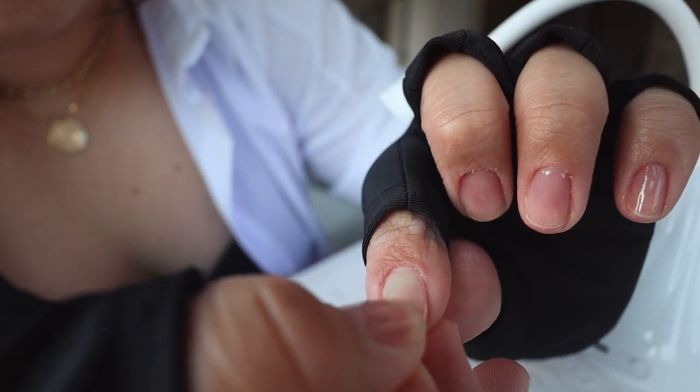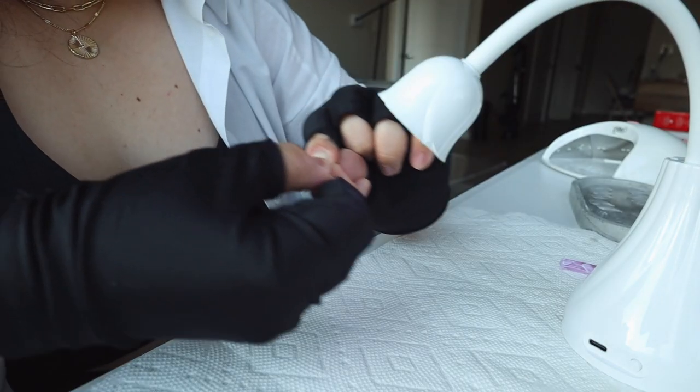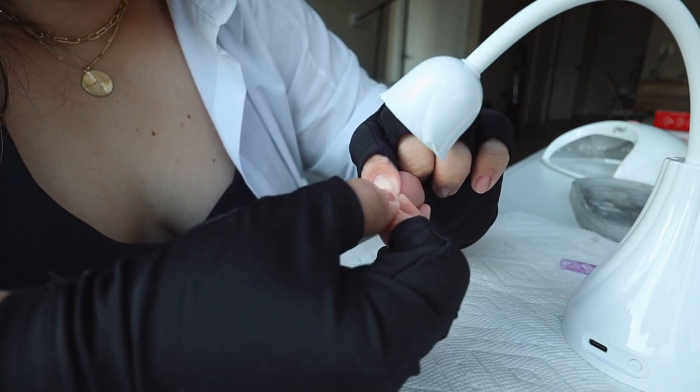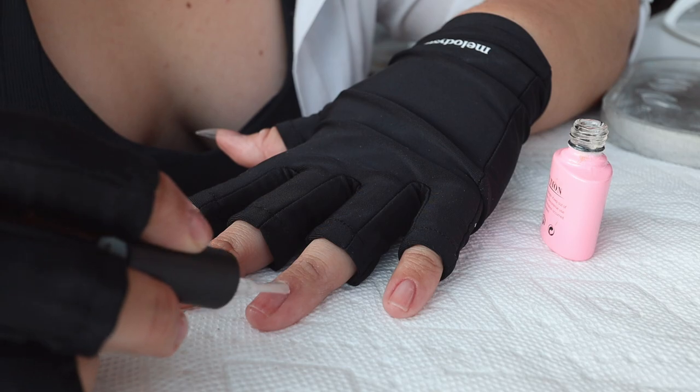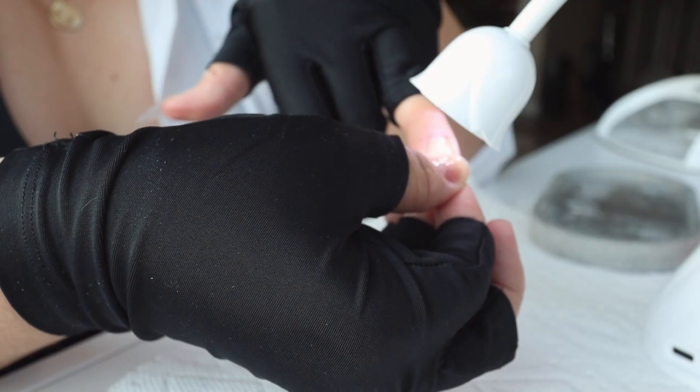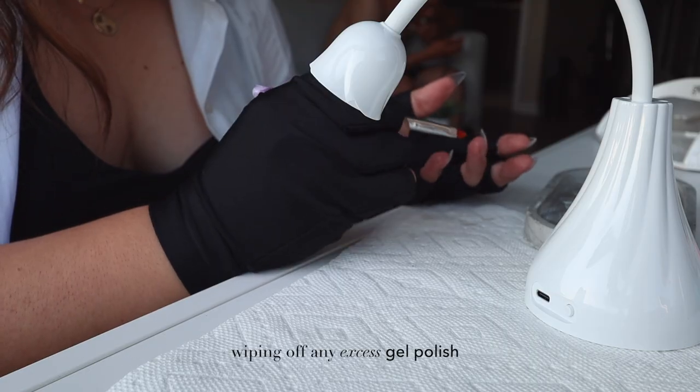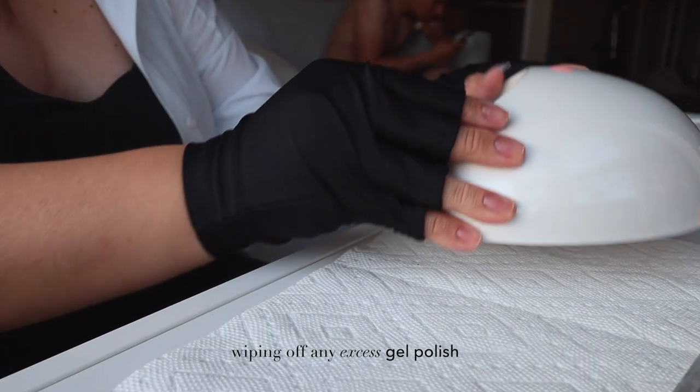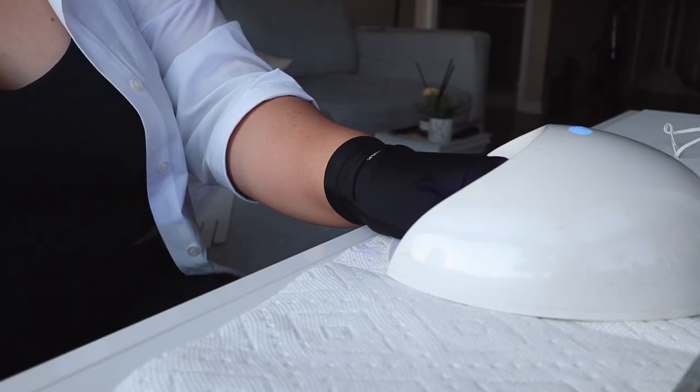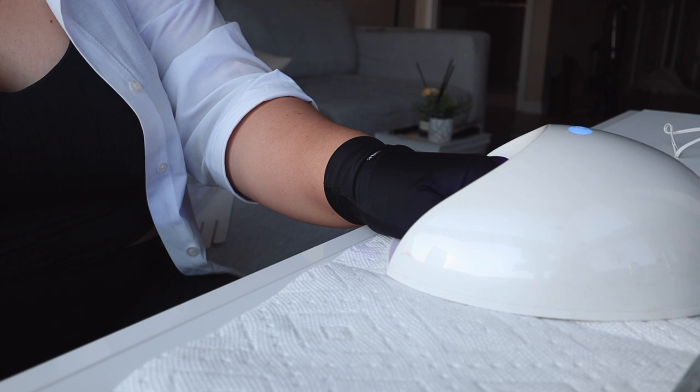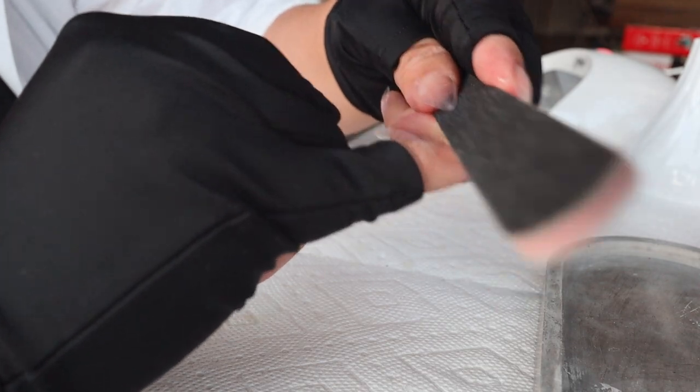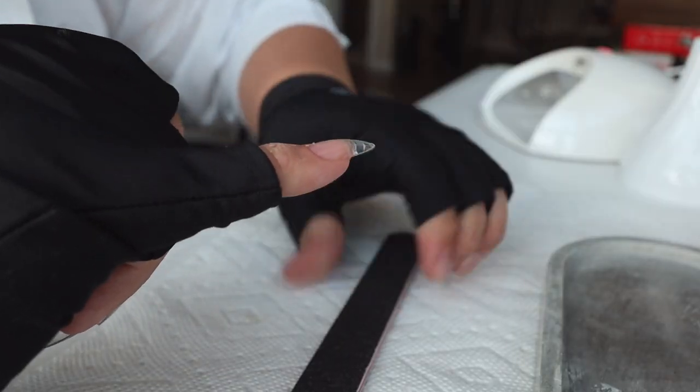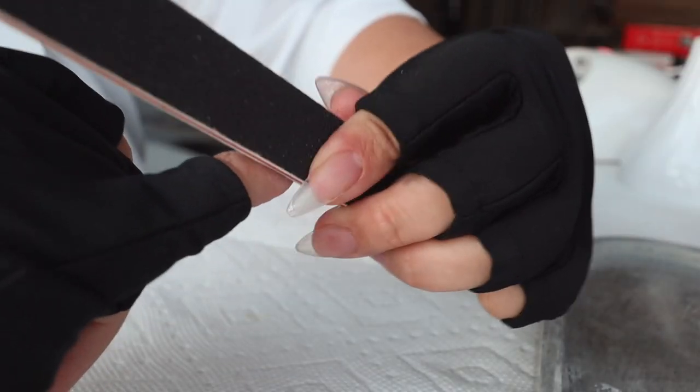When applying the gel tip, make sure to start from the end of the nail bed and then pushing forward to the tip of your nail. Once you've completed your entire hand, make sure to cure it under an LED light for at least 60 seconds. Then I used this nail file to file off any excess gel that might have spilled out during the adhesion process.